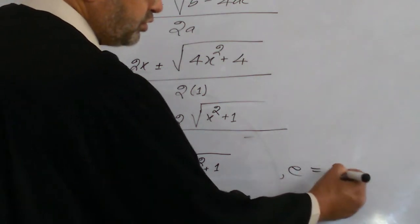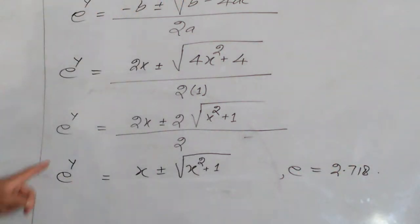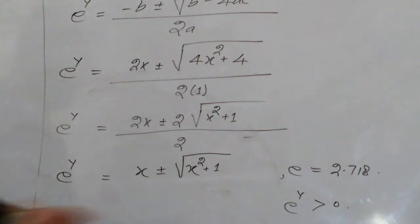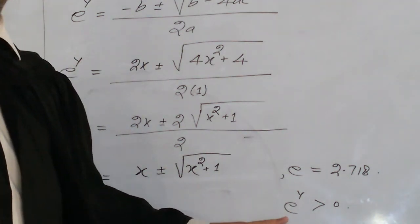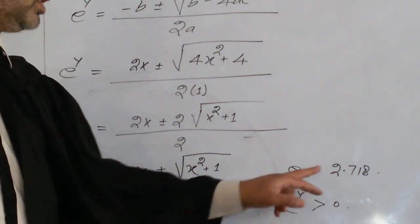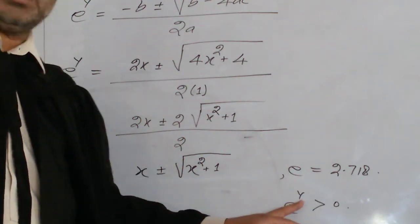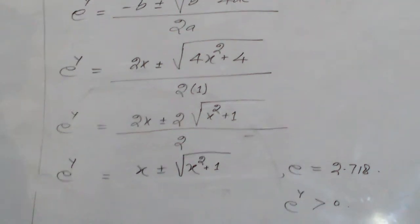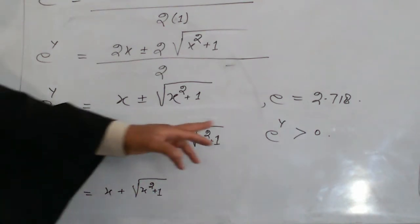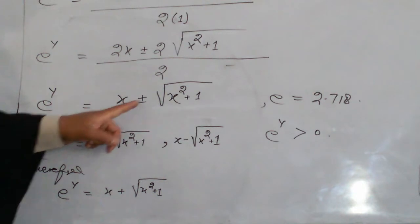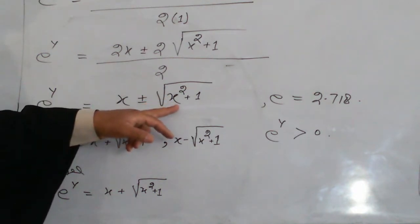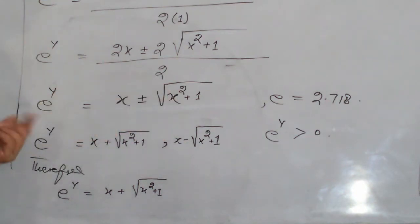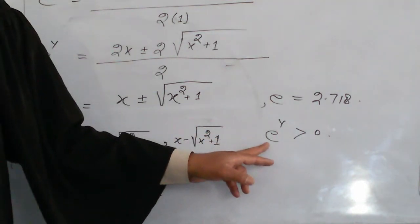Since e is the exponential base equal to approximately 2.718 and y is a real number, e raised to the power y is always positive. Therefore, there are two possible values: x plus the square root of x squared plus 1, and x minus the square root of x squared plus 1. According to the condition that e raised to the power y is always positive, we must determine which value is valid.